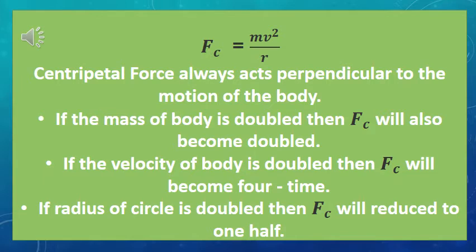Centripetal force always acts perpendicular to the motion of the body — this is what you need to remember. Also remember: if the mass of the body is doubled, the centripetal force will also be doubled. If the velocity of the body is doubled, the centripetal force will become four times. And if the radius of the circle is doubled, the centripetal force will be reduced to one half.